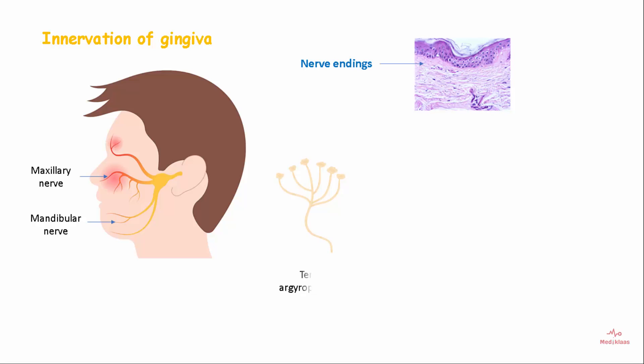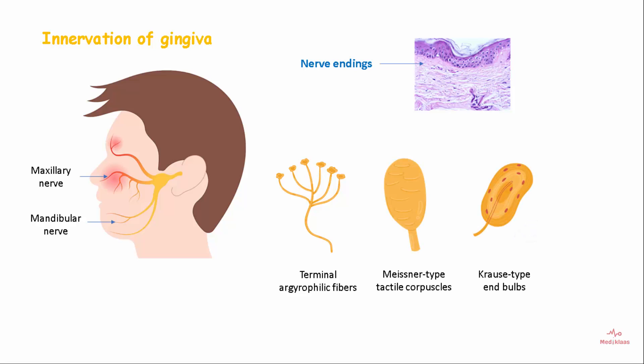The nerve structures present in the connective tissue are the terminal argyrophilic fibers, the Meissner-type tactile corpuscles, Krause-type end bulbs, and the encapsulated spindles.